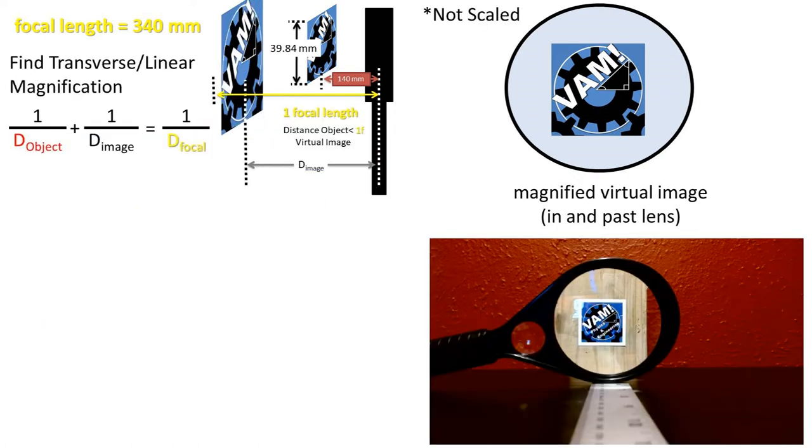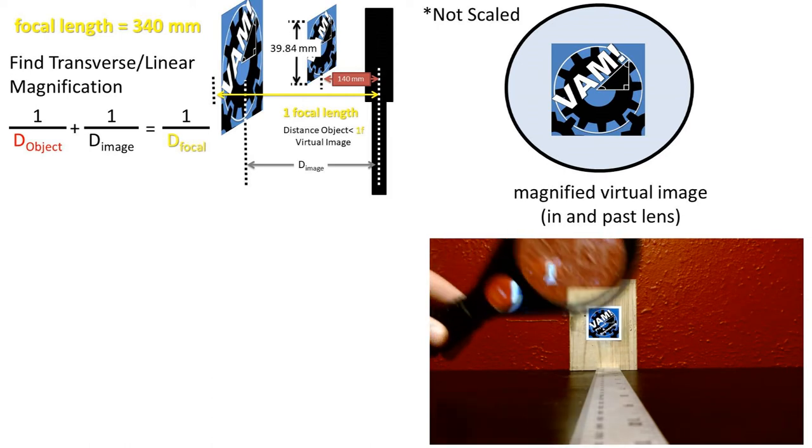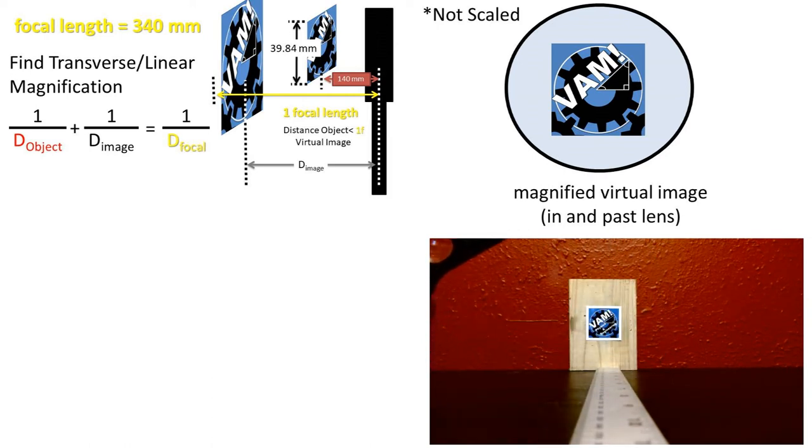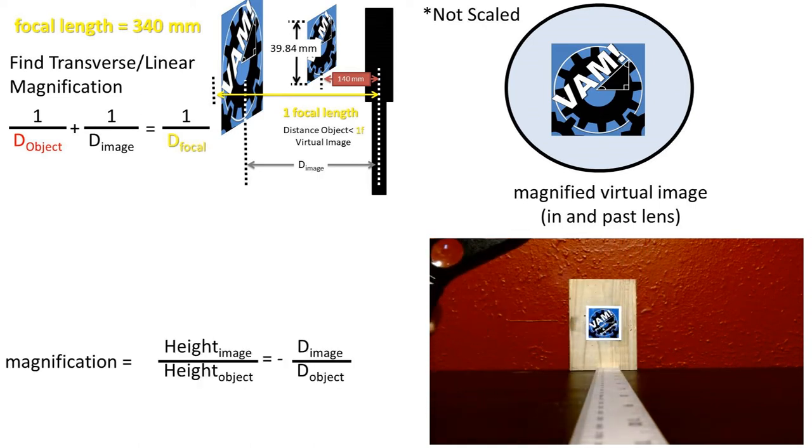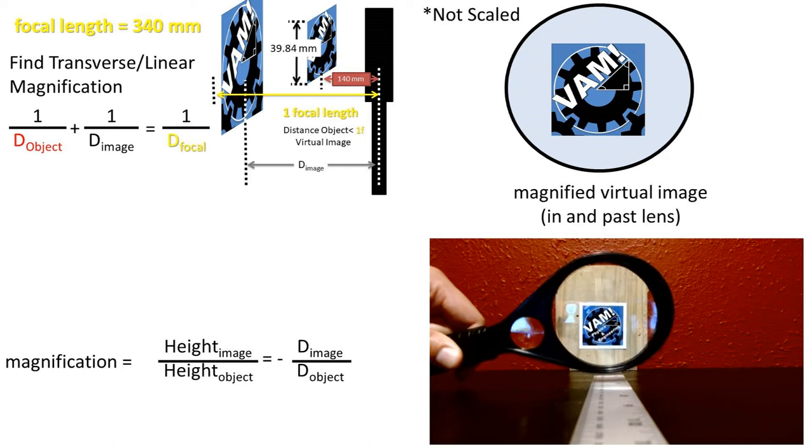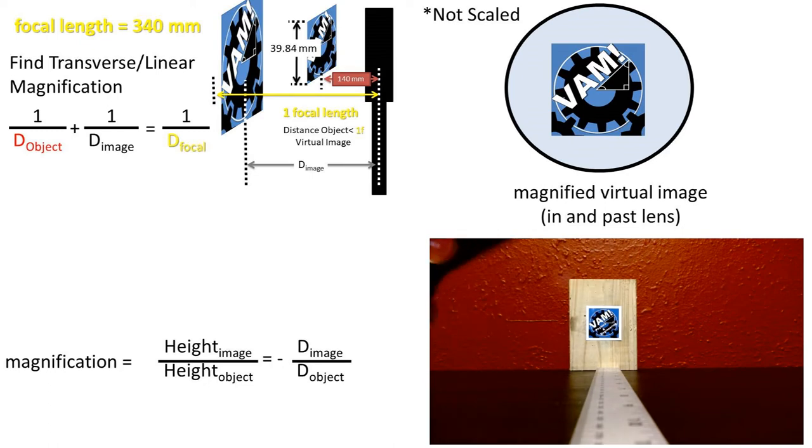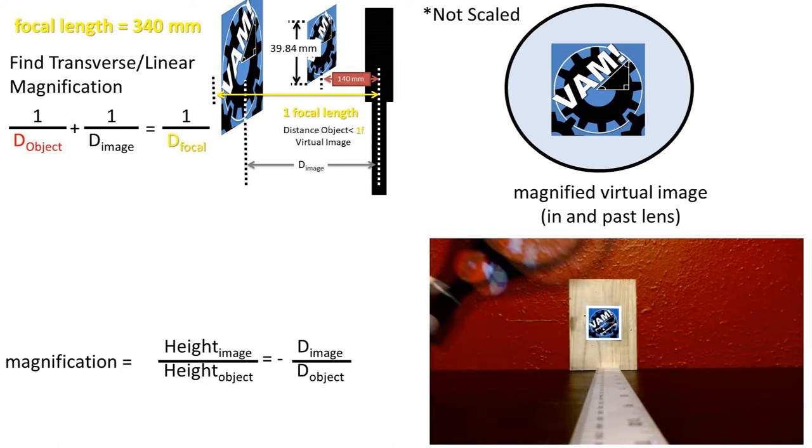So now we'll be using the equation, which is the thin lens equation, which is one over the distance to the object, plus one over the distance to the image, equals one over the focal length. We'll be using the linear magnification formula, which is the height of the image divided by the height of the object, and also, the negative distance to the image divided by the distance to the object, are both equal to the magnification factor. So now we need to get the distance to the image to solve this formula.